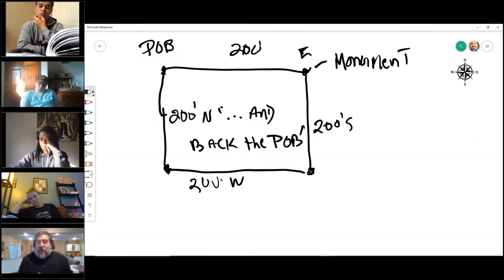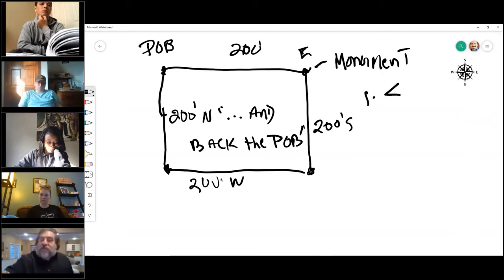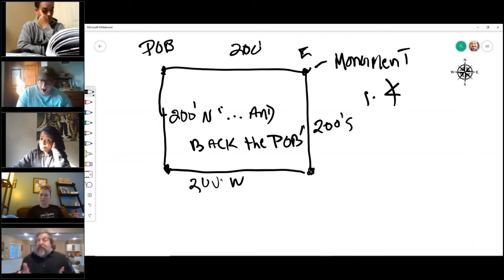Now the metes and bounds uses two things that the others do not use, which make this metes and bounds kind of a vital area. One is it uses angles. The other two you will see are actually just vertical squares and rectangles. This one allows for angles to be used in it.